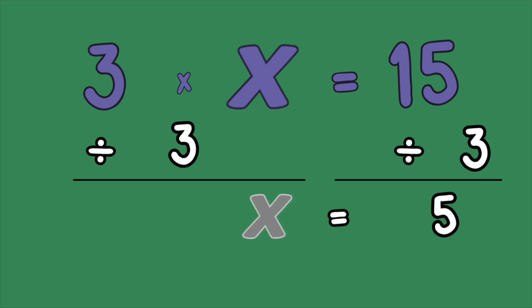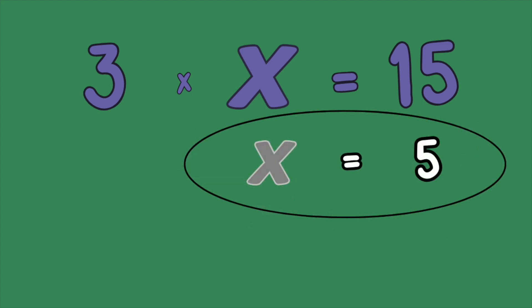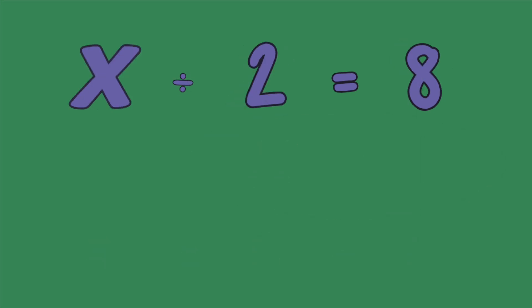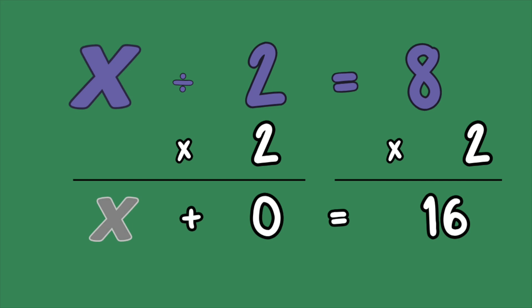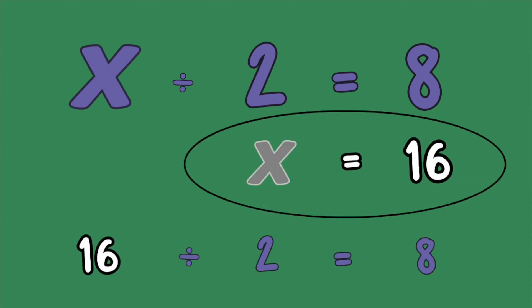x divided by 2 equals 8. This means, what number divided by 2 equals 8? To solve, do the opposite of divide. Multiply. 8 times 2 equals 16. So x equals 16, because 16 divided by 2 equals 8.